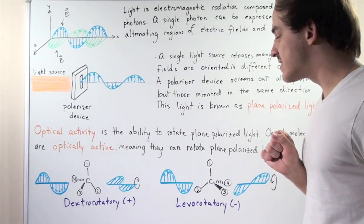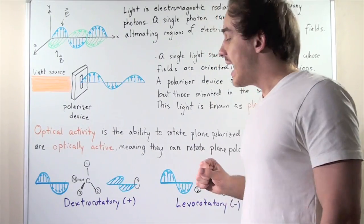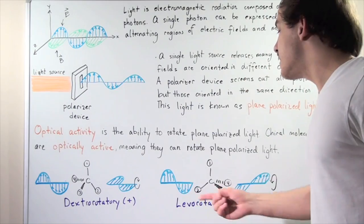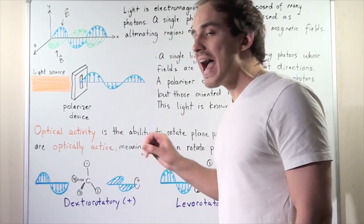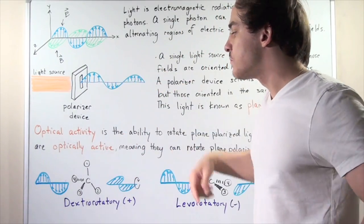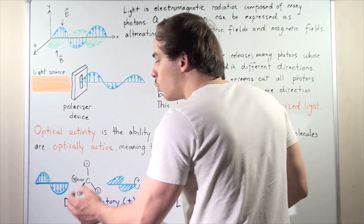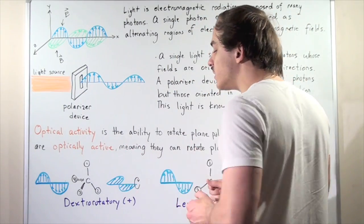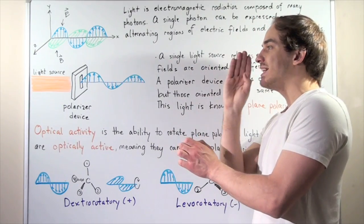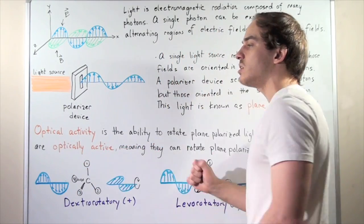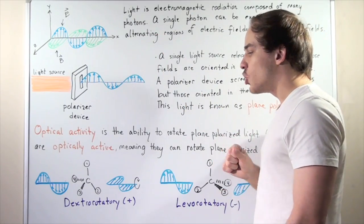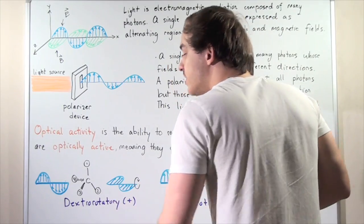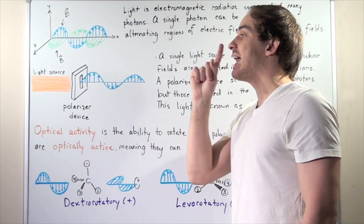One important difference exists between enantiomers. Suppose we have a chiral molecule and its mirror image — that is, its enantiomer. If we take plane polarized light and shine it on this molecule, it will rotate that light a certain amount of degrees. Let's say this enantiomer rotates the light clockwise as we're looking at the incoming light. When the light rotates clockwise, we call it dextrorotatory and give it a positive sign. So positive means dextrorotatory — the light is rotated clockwise as we look at it coming in.